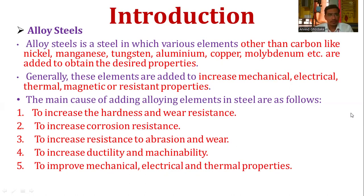Another objective is to increase the resistance to abrasion and wear. Then, to increase the ductility and machinability — the ability of the material to be drawn into wire and to be machinable for different machining operations. Alloying elements are also added to improve the mechanical, electrical, and thermal properties of the steel.